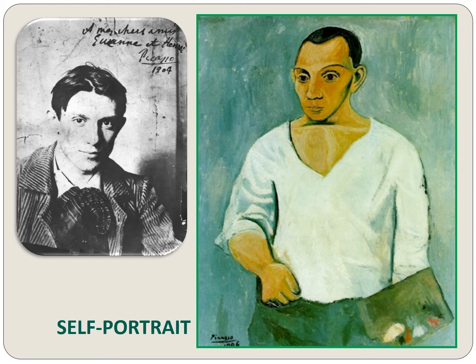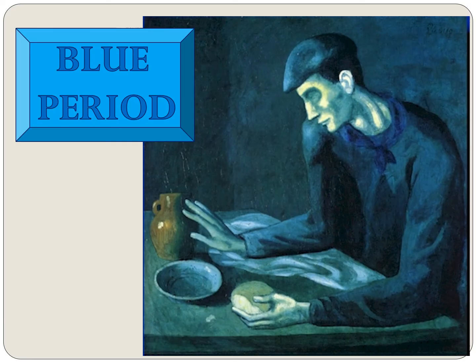This was called his Blue Period. Let's look at a painting he did during his blue period. Here, Picasso was feeling lonely. He was poor and had no hope when he did this painting, so he painted the way he felt.